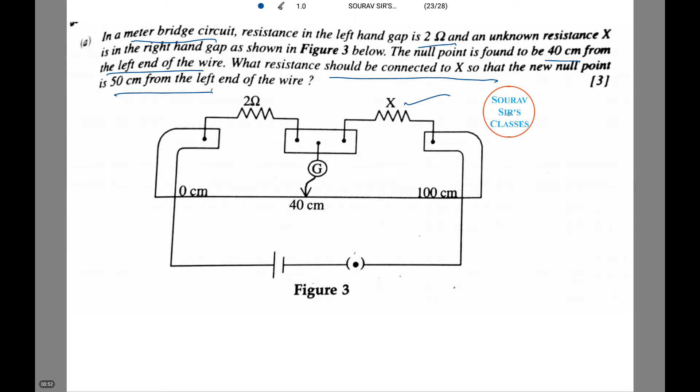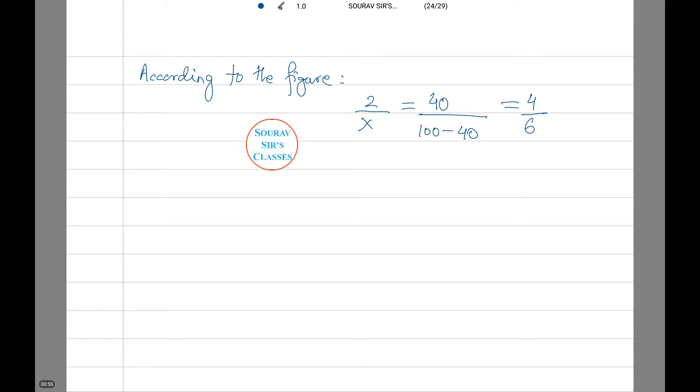Let's see how to do this. Now according to the figure, 2 by X equals to 40 by 100 minus 40, which equals to 4 by 6. Therefore X equals to 3 ohms.